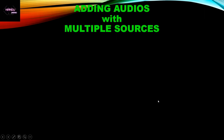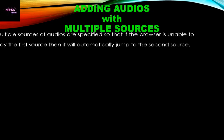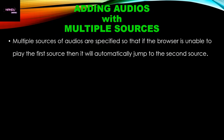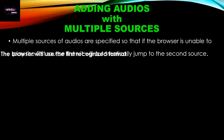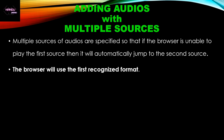Now we will see adding audios with multiple sources. We can provide multiple sources to the browser. Multiple sources of audio are specified so that if the browser is unable to play the first source, it will automatically jump to the second source. That means if one audio file format is not supported by the browser, the browser will use the first recognized format.